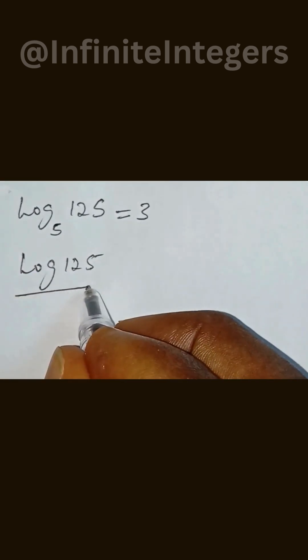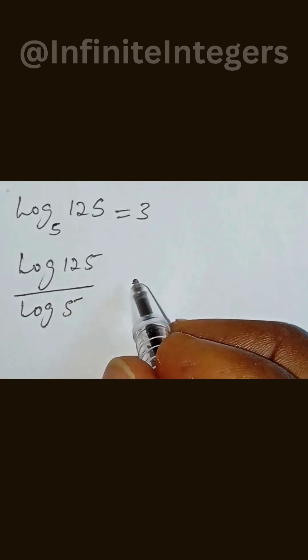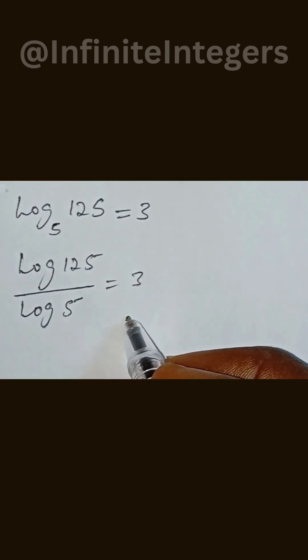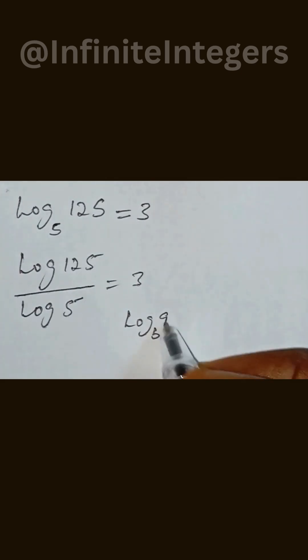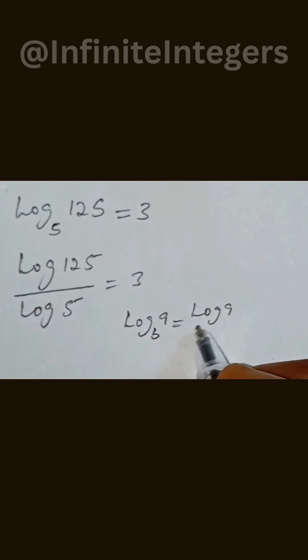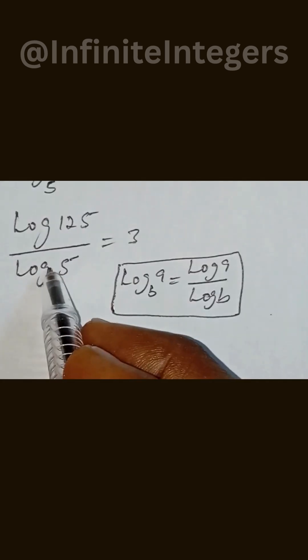Because if we have log base b of a in log identity, we can write it as log a over log b. So the next step becomes we multiply the denominator with these three.